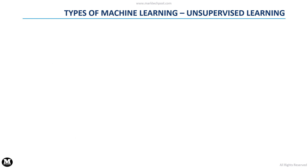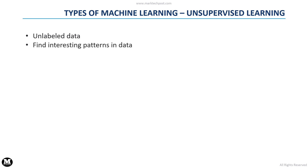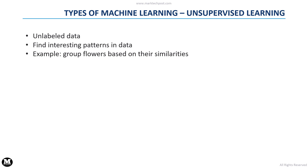When we use an unsupervised learning method, we have to work with unlabeled data. The machine learning algorithm has to find interesting patterns in the available data. For example, we can consider a model that groups flowers based on their similarities, without knowing their species.